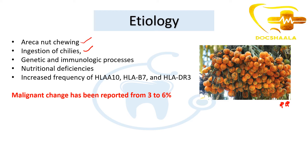The etiology also includes ingestion of chilies, genetic and immunologic processes, nutritional deficiencies, and increased frequency of HLA-A10, HLA-B7, and HLA-DR3. Malignant change has been reported in three to six percent of the population.